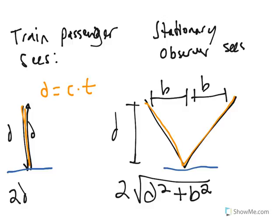So the two observers saw light travel different distances. Yet we know that they both must have also seen light travel at the same speed. So how can this be, since these distances are not equal?